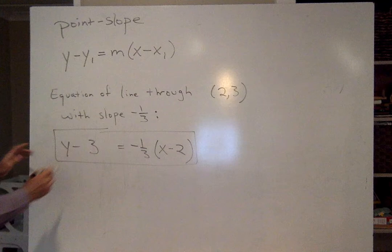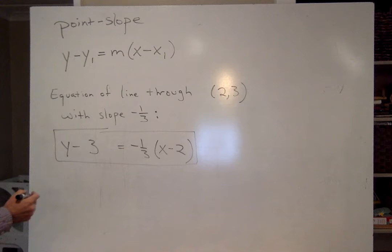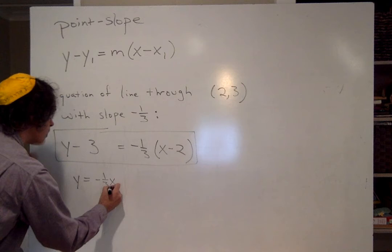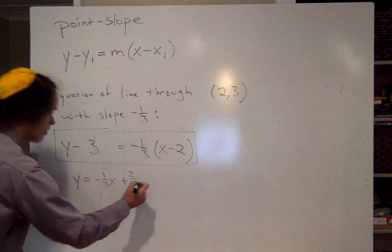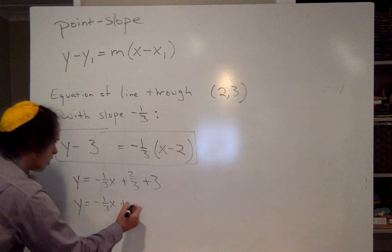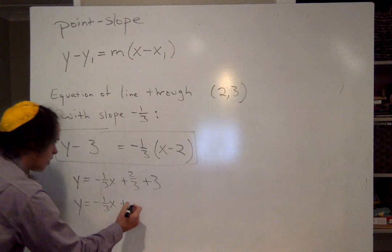You can solve that for y if you want to to put it into slope-intercept form you get y equals I'm going to distribute the one-third minus one-third x plus two-thirds, take this minus 3 put it to the other side so y equals minus one-third x plus this is nine-thirds plus eleven-third did I do that right? You don't have to do this, this is the answer right here but these are two ways of stating the exact same line.